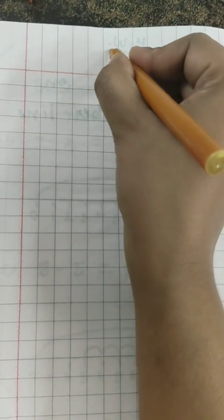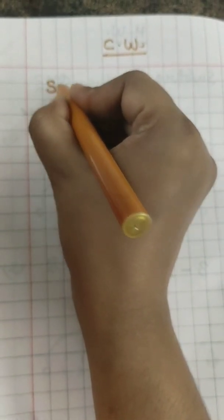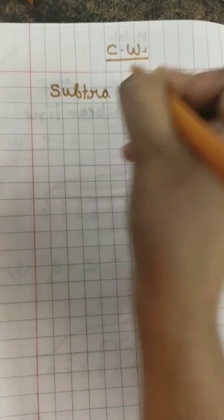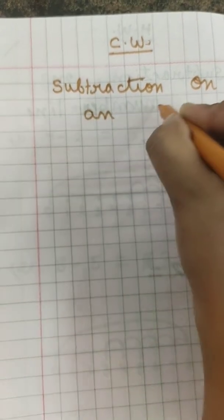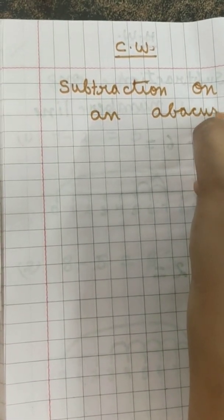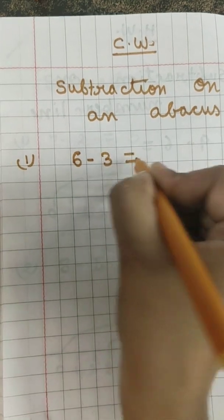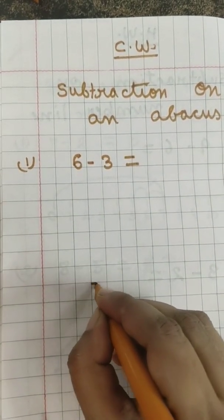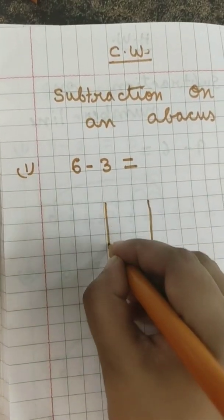See, we have done addition on abacus, now just like that we will do subtraction on abacus. Here ma'am will write classwork and here ma'am is going to write subtraction on an abacus. The first question is 6 minus 3. So you all know how to make an abacus. One straight line, then two spikes, one for ones and one for tens.